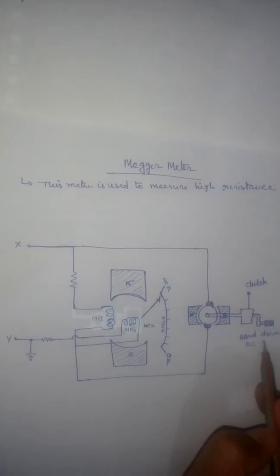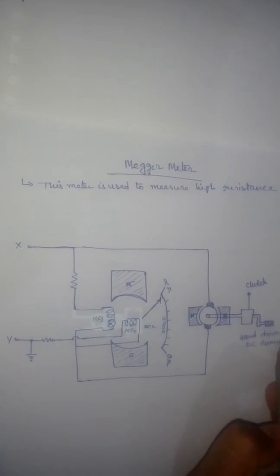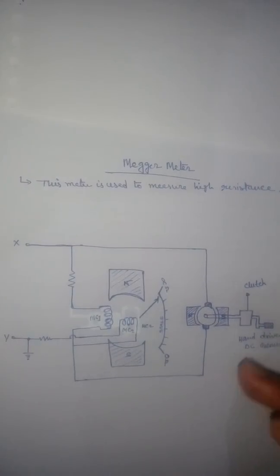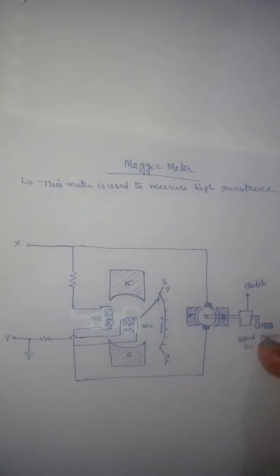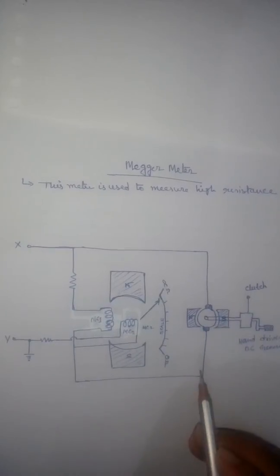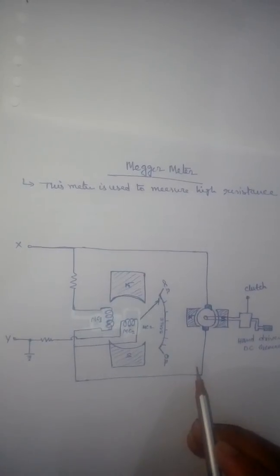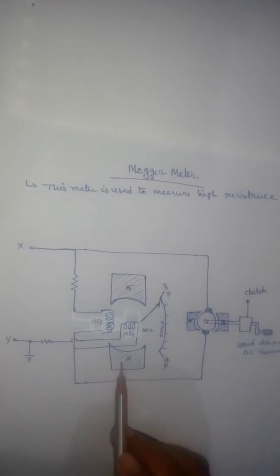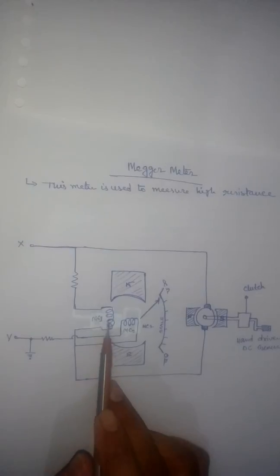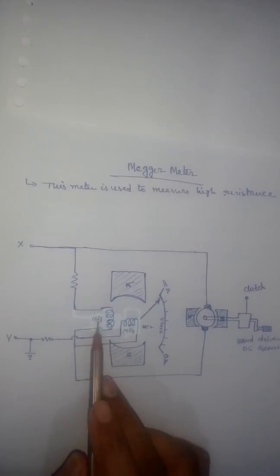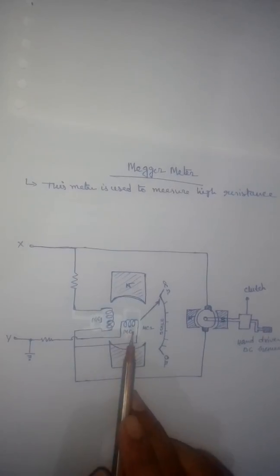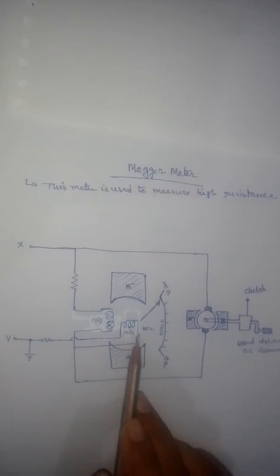This is a hand-driven DC generator, meaning it is a generator driven by hand and it will generate DC supply. In the moving system, you can see that there are two coils: MC1, which is moving coil 1, and MC2, which is moving coil 2.